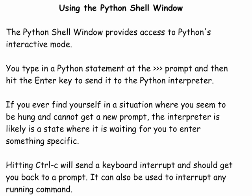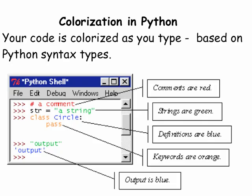In Python there is a shell window that provides access to Python's interactive mode. You type a statement at the prompt and then hit the enter key to send it to the Python interpreter. If you ever find yourself in a situation where you seem to be hung and cannot get a new prompt, the interpreter is likely waiting for you to enter something. Hitting the control key will send a keyboard interrupt and you should be able to get your code back.